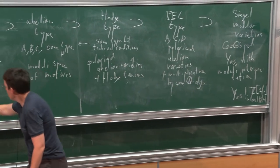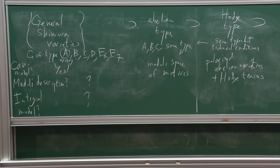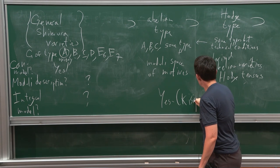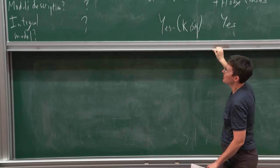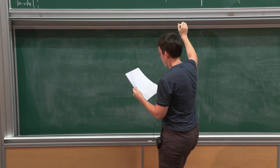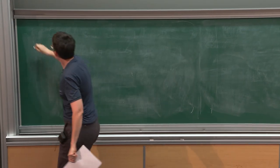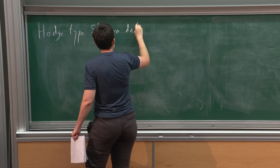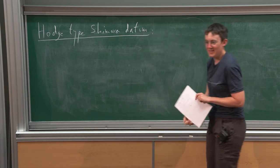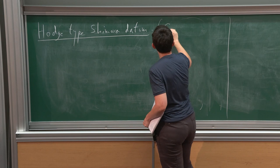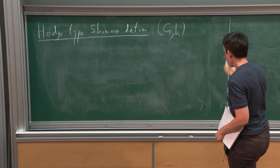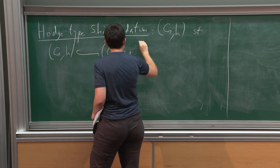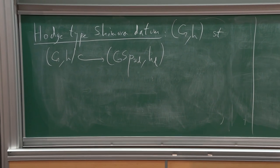Let's talk a bit more about integral models. We do know how to construct integral models up to Abelian type Shimura varieties. Let me define what a Hodge type Shimura datum is. A Hodge type Shimura datum is just a Shimura datum that has an injection into the Siegel Shimura datum — that is, there exists some (D, E) and there exists an injection. Abelian type is basically Hodge type up to center: you have a map that is an isomorphism on G^ad, the adjoint group.